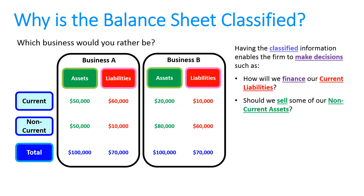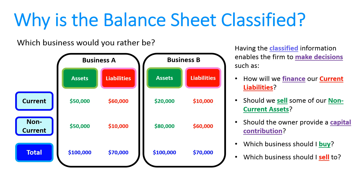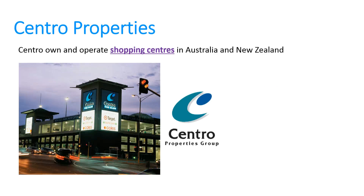So fundamentally, that's why we do a classified balance sheet — to make decisions. For Business A, the math says they don't have enough current assets to cover current liabilities, so they might need to sell some non-current assets to raise cash, or have the owner provide capital. If you're thinking about buying shares, you'd prefer Business B as there's less risk of insolvency in the next 12 months. The same applies to suppliers offering credit terms and banks deciding who to lend to — it's all about assessing risk.